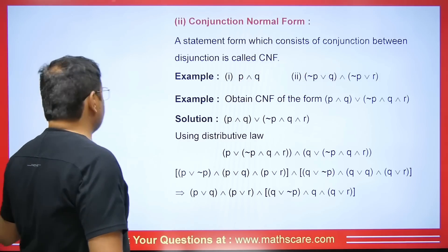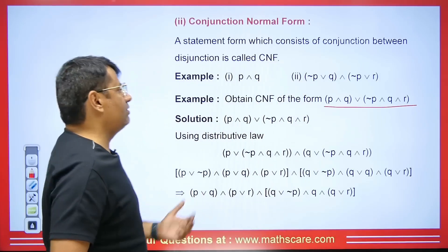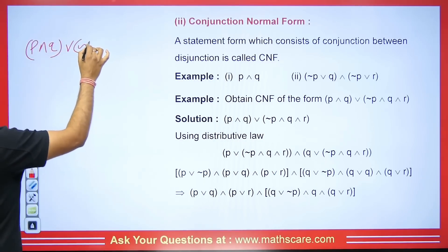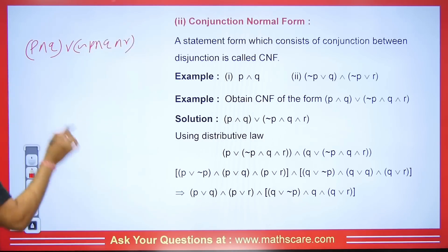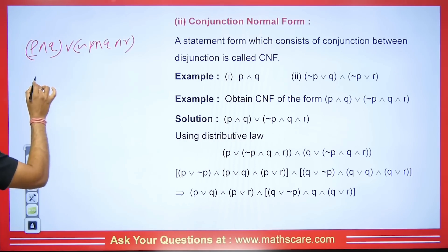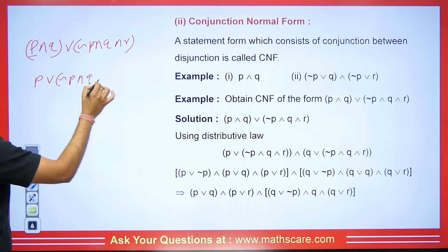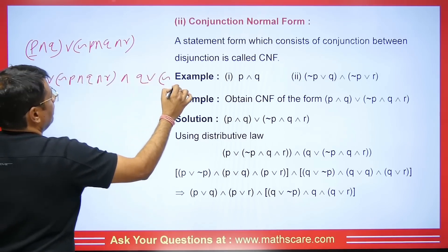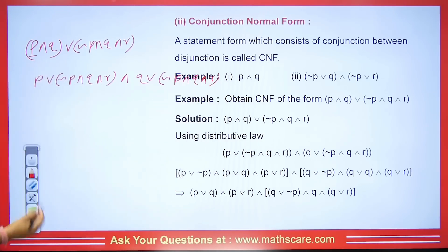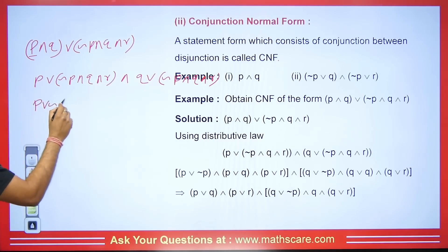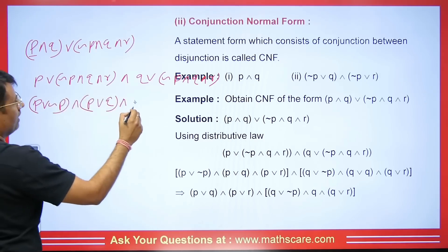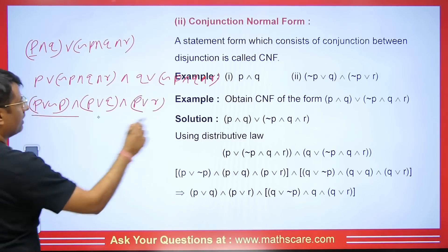Now I will convert some and show you. We are asked to find the CNF. Here we have P AND Q, and this will be OR — and here we have negation of P, Q and R. Now we will use the distributive law. This P will go with all of these, giving P OR (negation of P, Q and R). And then Q will go with all of them as well. Q OR (negation of P, Q and R). Then this one will be negation of P, and AND will come, then P OR Q, then AND, then P OR R.